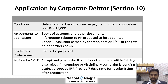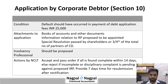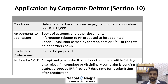An application can also be filed by the corporate debtor under Section 10. The fee is ₹25,000. Along with the application, documents such as books of accounts, proof of default, its inability to pay, and a special resolution passed by the shareholders with three-fourths majority are to be attached. If everything is in order, NCLT will accept the application. In case of an incomplete application or any disciplinary proceeding pending against the IRP, it will provide seven days for resubmission after rectification.